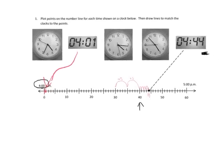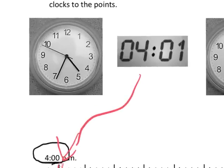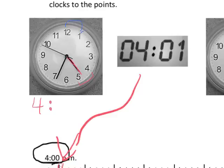Now let's do some of those analog clocks. So that first analog clock right here — we know that the time is between 4 and 5, because the hour hand is between 4 and 5. So we know it's going to be 4 o'clock, and then we have to figure out how many additional minutes it's going to be. So let's count. We start at the 12 and we count over: 5, 10, 15, 20, 25, 30.